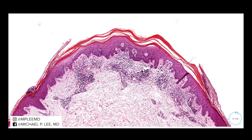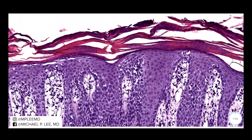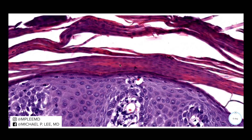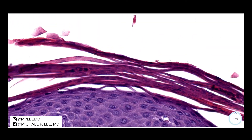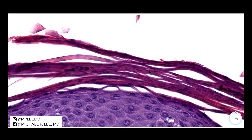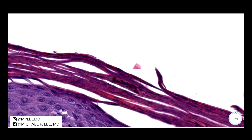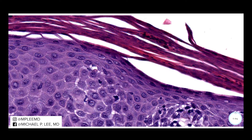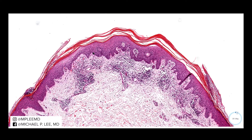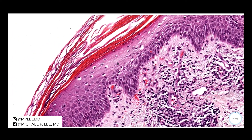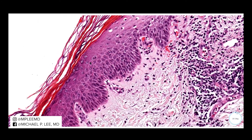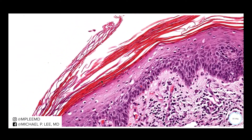Now let's look at the stratum corneum. In psoriasis we had extensive confluent parakeratosis with neutrophils wedged in between. In nummular dermatitis, the parakeratosis is pretty patchy - it's here, then it skips a little area, then there's some up here and some down here. And certainly there are no neutrophils visible in the stratum corneum here.